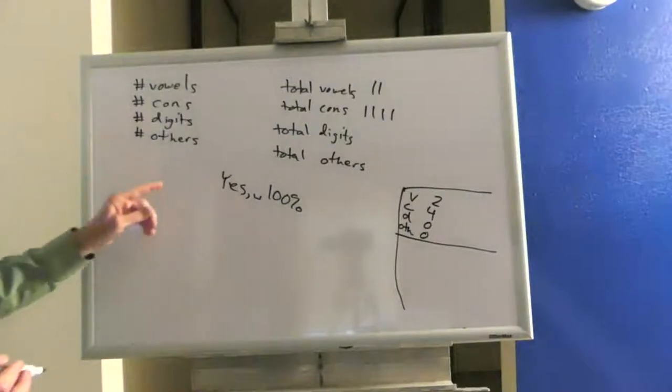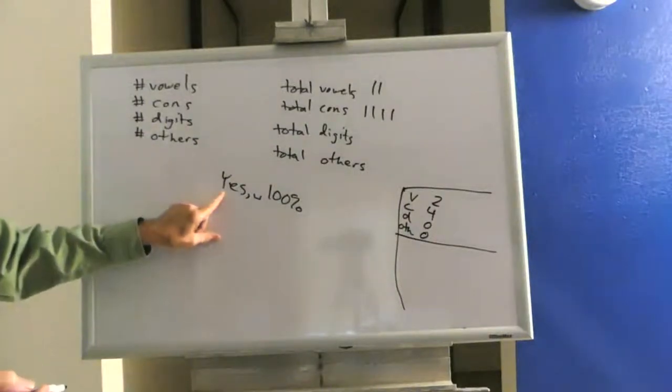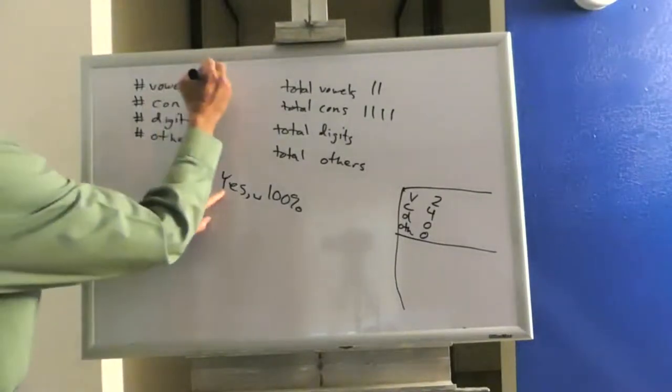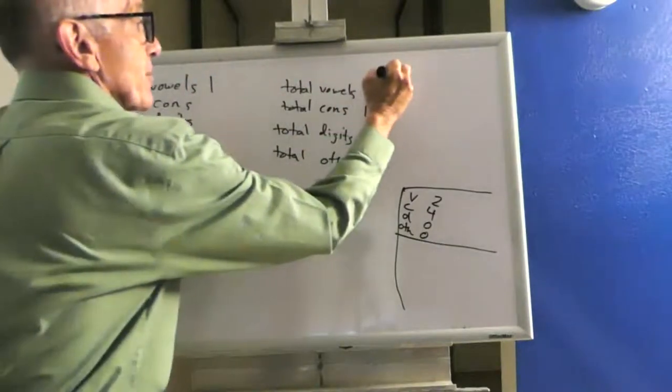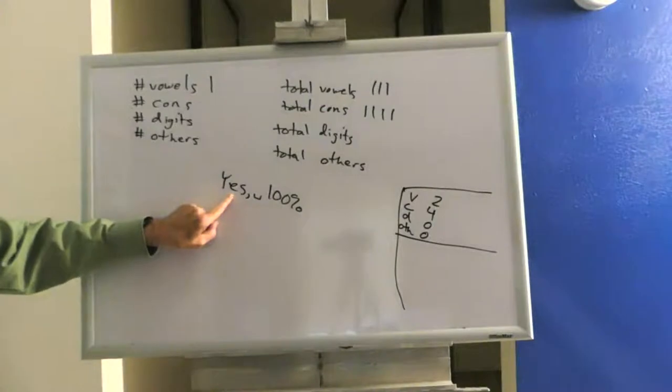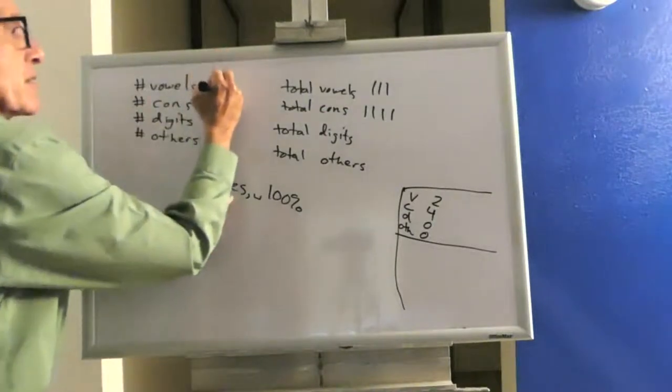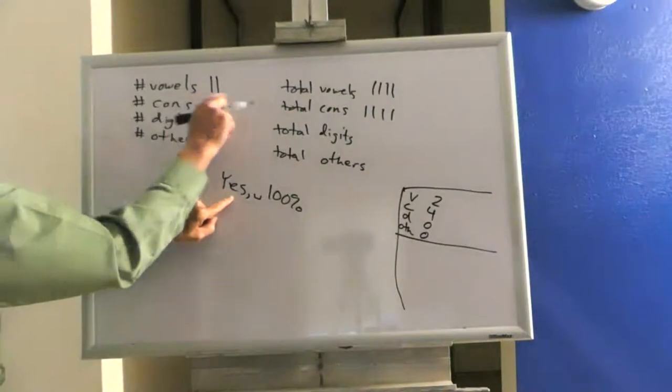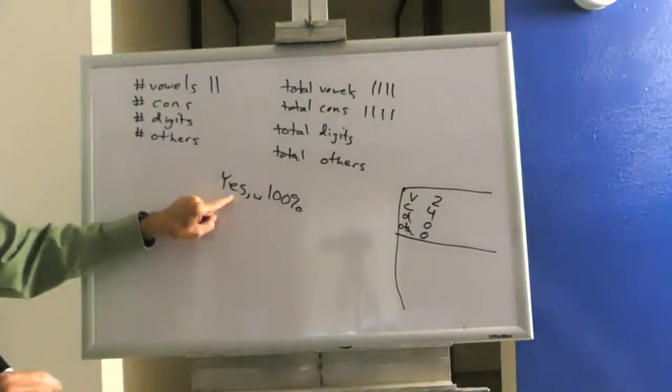I now go through this character by character. Is Y a vowel? Well, for the purposes of this program, we're going to say that it is, which means I have one vowel here and I add that. Next character is E. Is E a vowel? Yes, it is. That means I have two vowels in this sentence and four vowels that I've seen so far.